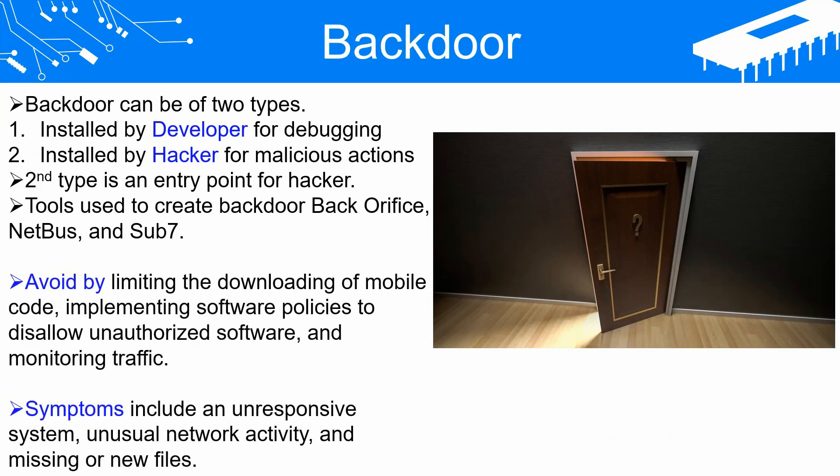To prevent backdoors, it is advisable to limit the automatic downloading of mobile code to your systems, implement software policies to disallow the installation of unauthorized software, monitor both incoming and outgoing traffic, and make software and driver signing a mandatory requirement. If a backdoor has been compromised, you may observe various noticeable indications, including an unresponsive system, applications that appear to be opening or closing on their own, unusual network connections and activity, and the presence of new or missing files.